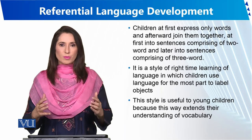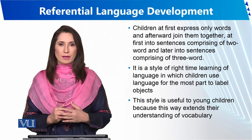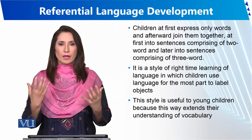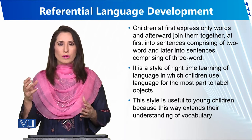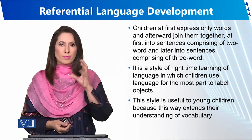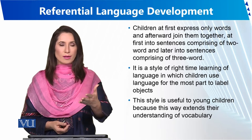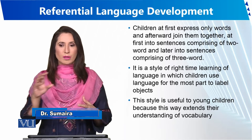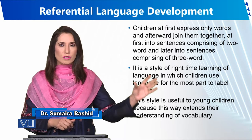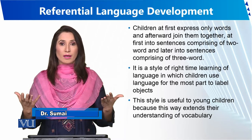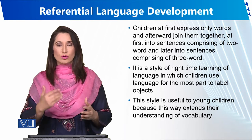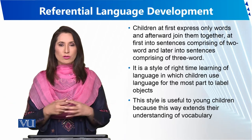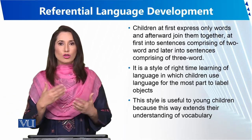Referential language is the first stage of language learning, in which children express one word like 'papa' or 'mama,' or they make a sign for something they want. For example, if you want to drink water, you will put a glass in hand — that is a reference. The child communicates this way, so the first stage is referential language where the child learns one word, then joins two words, then makes sentences.